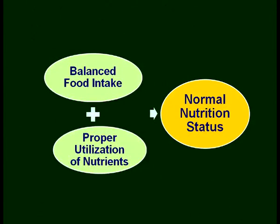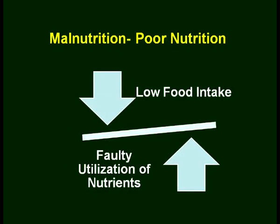How do you attain normal nutritional status? With balanced food intake alone — that is not enough. You have to have the proper utilization of nutrients which you are getting from the food. So the combination of balanced food intake and proper utilization of nutrients gives you the normal nutritional status.